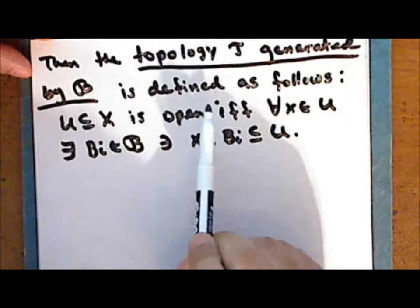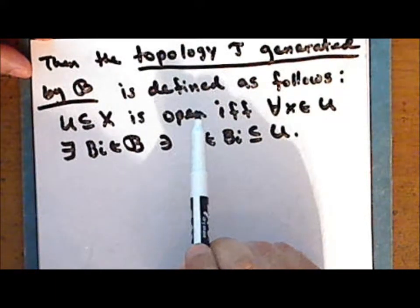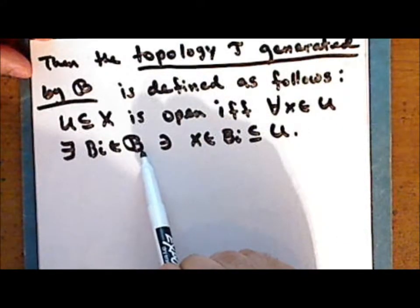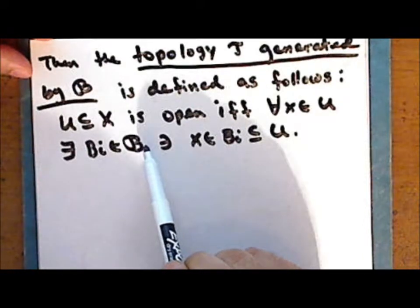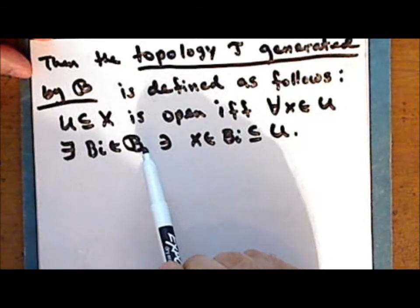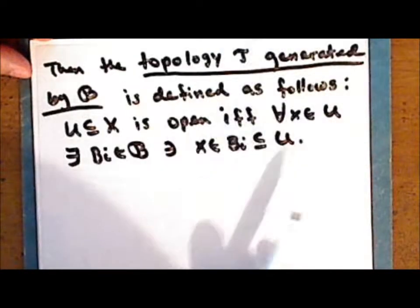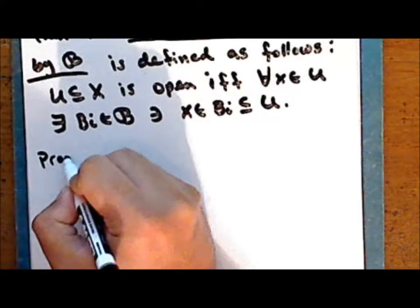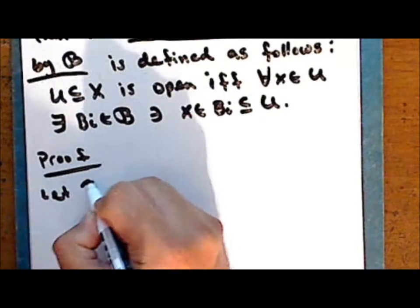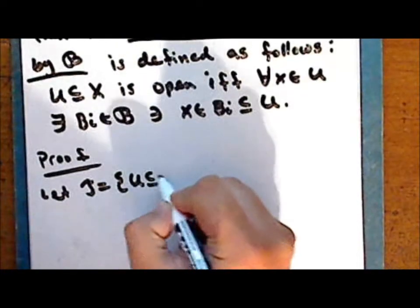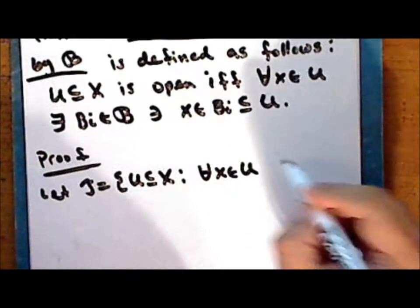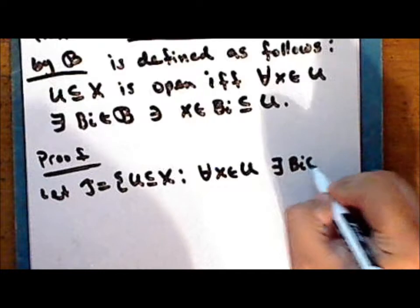Notice that in this definition we are not assuming an a priori or pre-existing topology; rather, we are defining a topology in terms of a collection of subsets of a set X that satisfies two conditions. We refer to this as a topology generated by a basis.